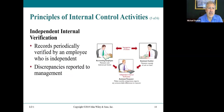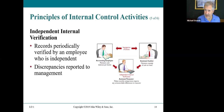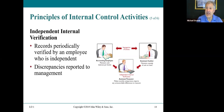Independent internal verification: records should be periodically verified by an employee who is independent. Discrepancies — differences between what should have happened and what actually happened — must be reported to management. For example, Employee A is responsible for maintaining the books for cash, another employee handles the cash, and then a third person independently monitors and verifies. If they collected a thousand dollars in cash on Monday, that thousand dollars should be recorded in the accounting records.